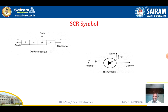The SCR is a PNPN device. One junction is PN, another is NP, and another is PN — giving three junctions. It has three terminals: anode, cathode, and the gate, which is connected to the P-type material. The symbol of an SCR looks like a PN junction diode, but with an additional gate terminal indicated.